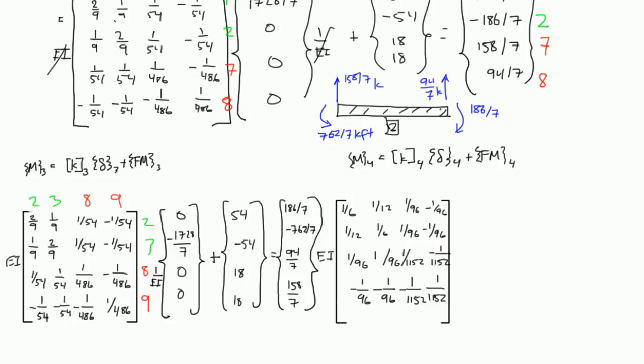So that means if we drew member 3, here's element 3, and it has the distributed load up on top. We're going to have 2 and 3 were rotational, right? So 186 over 7 kip foot clockwise, and then here we have a negative. That means it was going the opposite of our assumption for a degree of freedom. That's just 762 over 7, and then you have your 8 and 9 correspond to the vertical reactions, right? 94 over 7 kip, and then 158 over 7 kips.